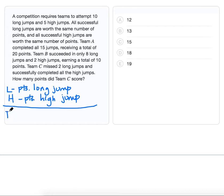For Team A, we're told they completed 15 jumps, receiving a total of 20 points. So that means we have the equation 10L plus 5H equals 20.